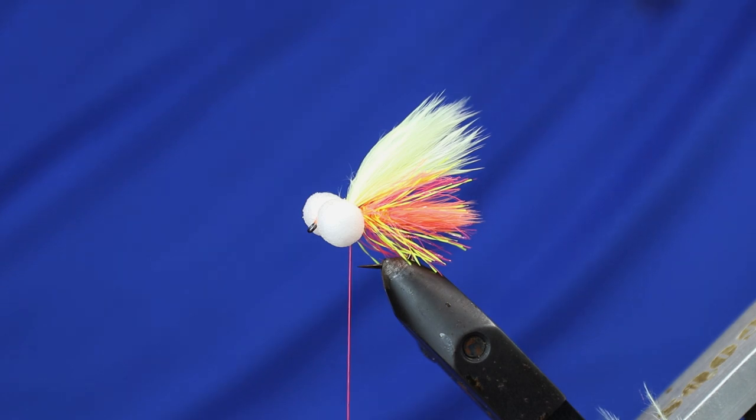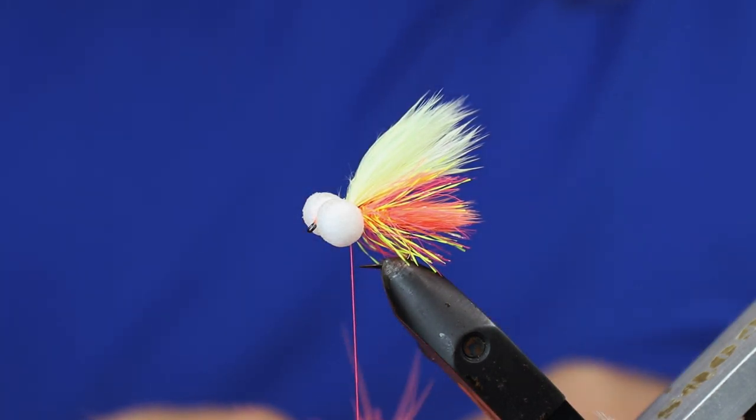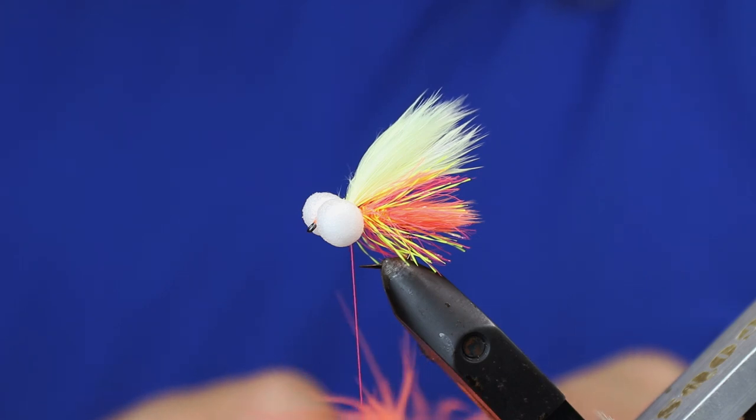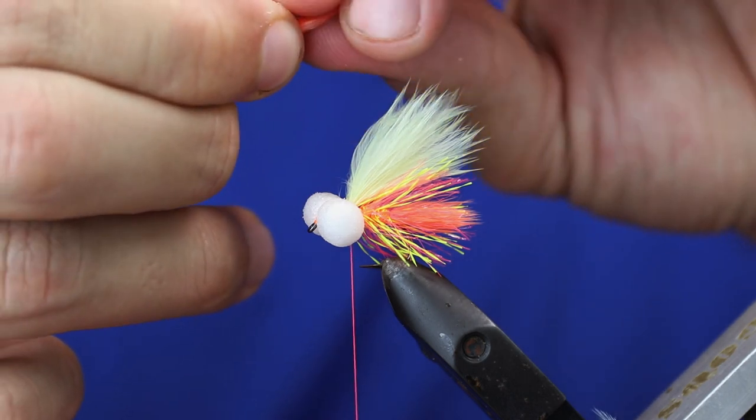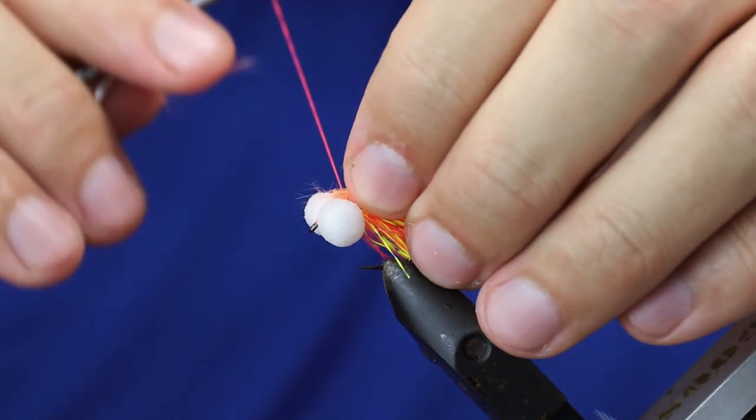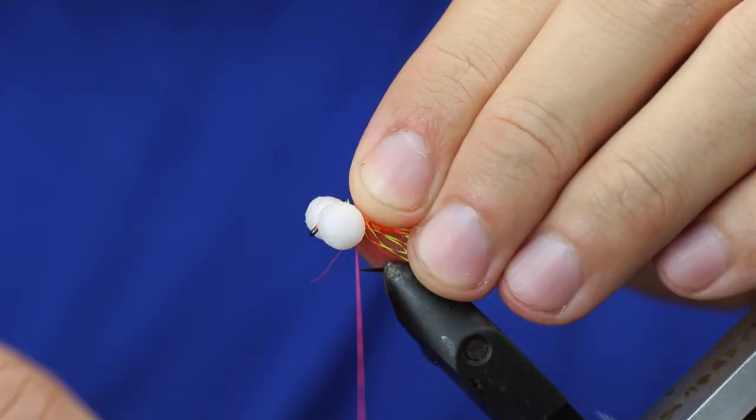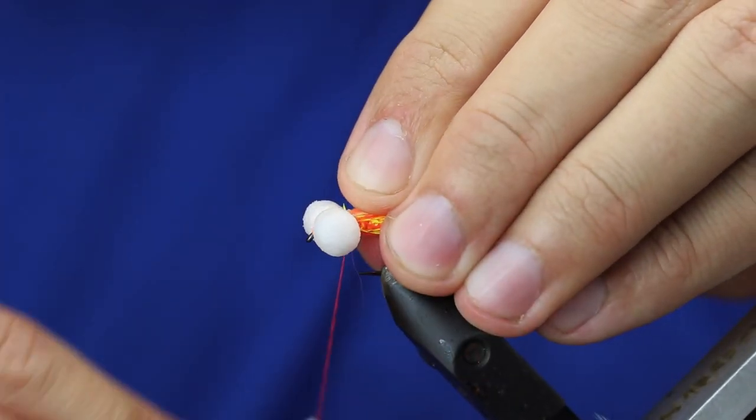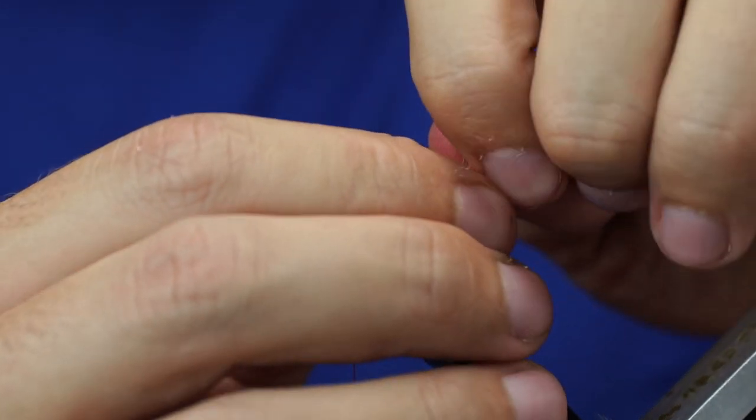Then we're just going to finish it off with another strand, a few strands of the coral. You don't need much, probably about half an inch I would say here. Catch it in again and then take away the wing at length.